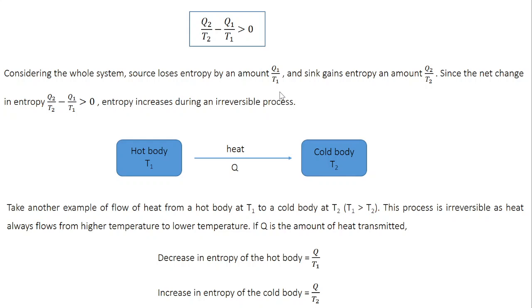We derived this result for the specific case of a Carnot engine. Let's see whether this is true for any general irreversible process. Take another example: a hot body at higher temperature T1 and a cold body at lower temperature T2. When you bring these two into thermal contact, heat flows from the hot body to the cold body. Let Q be the amount of heat transferred. This is an irreversible process because, according to the second law, heat flows only in one direction — from hot to cold, and the reverse flow is not possible.